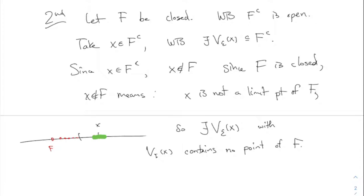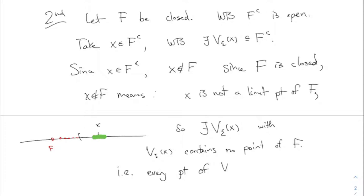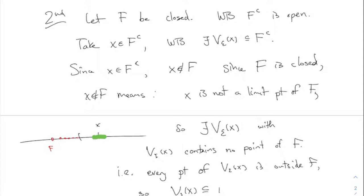That means what we wanted to show: the neighborhood is a subset of the complement. Every point of V_epsilon of X is outside F — V_epsilon of X contains no point of F — so V_epsilon of X is a subset of F^c. And that's what we wanted.